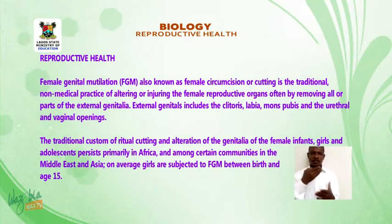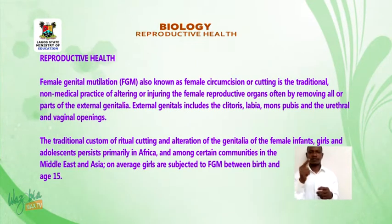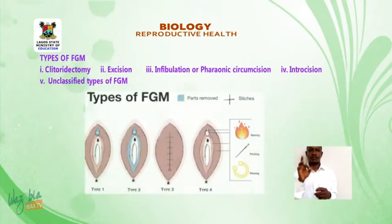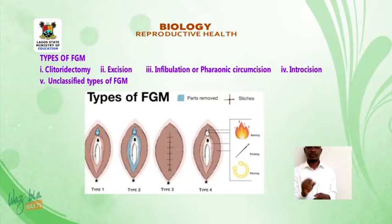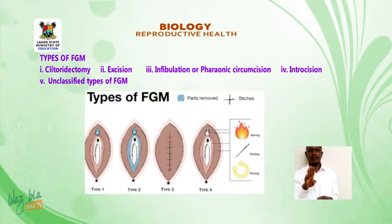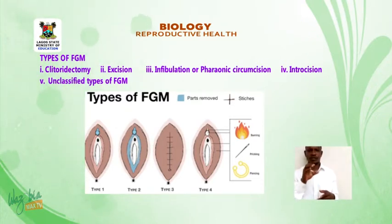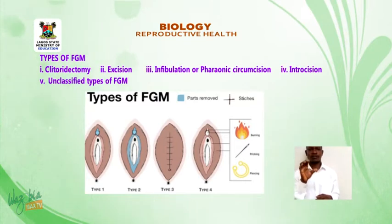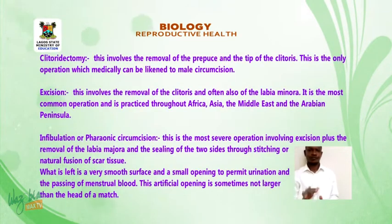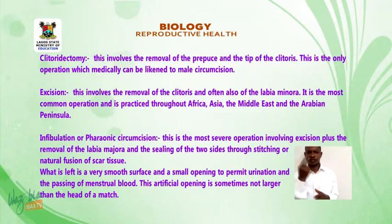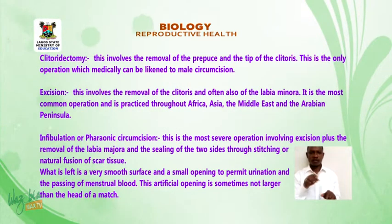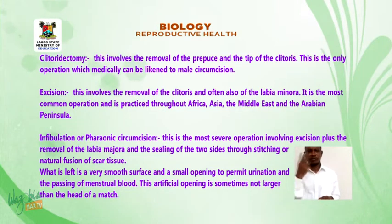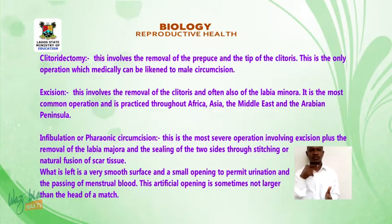On average, girls are subjected to FGM between birth and age 15. Types of FGM: one — clitoridectomy; two — excision; three — infibulation or pharaonic circumcision; four — introcision; five — unclassified. Type one, clitoridectomy, involves the removal of the prepuce and the tip of the clitoris. This is the only operation which medically can be likened to male circumcision.